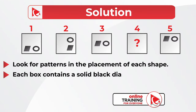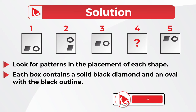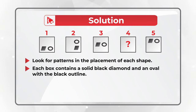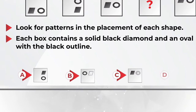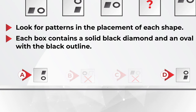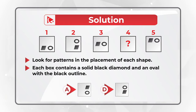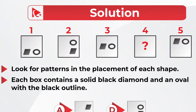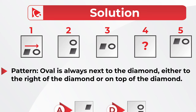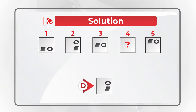You might have noticed that the smaller shapes inside the squares are always a diamond filled with black and an oval with a black outline. This pattern is persistent for shapes 1, 2, 3, and 5. We can safely assume that square 4 will have similar shapes inside, which automatically excludes choices B and C, leaving only possible choices A and D. To solve this puzzle, we need to detect the second pattern: the oval is always next to the diamond, either to the right of the diamond or on top of the diamond. Based on this, the correct choice is Choice D.